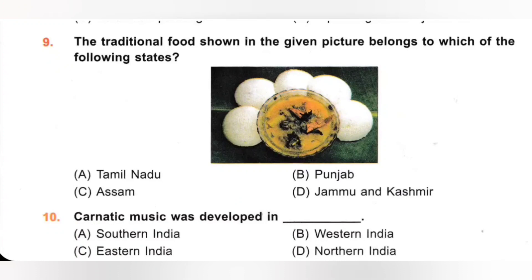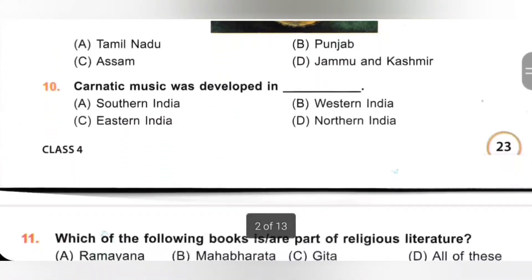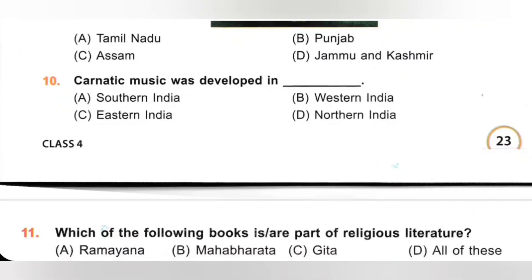10th. Carnatic music was developed in: A. Southern India, B. Western India, C. Eastern India, D. Northern India. Carnatic music is a type of classical music which was developed in Southern India. Option A is the correct answer.